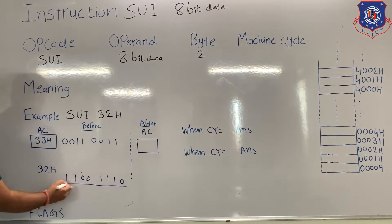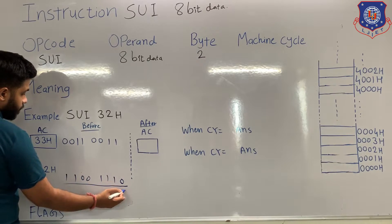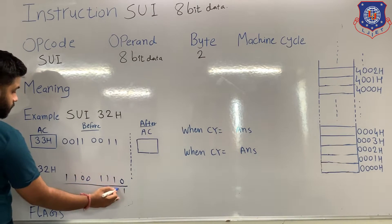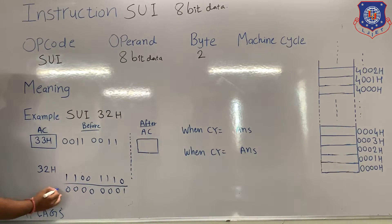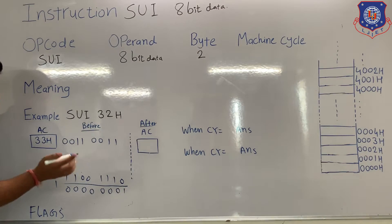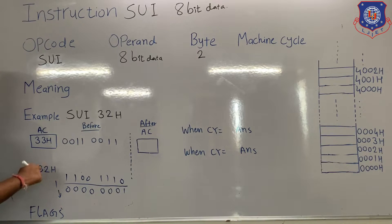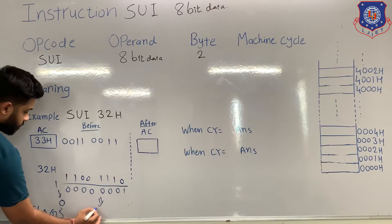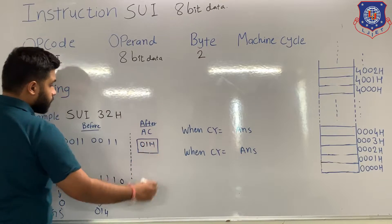After that, the microprocessor will add the two numbers: the accumulator content and the 2's complement of 32H. Adding them, you get 100000001. After performing the subtraction, the microprocessor will complement the carry. We are getting carry 1, and the microprocessor will complement it to 0. If you convert the result into hexadecimal, you will get 01H. So after the execution, the content of the accumulator is 01H.